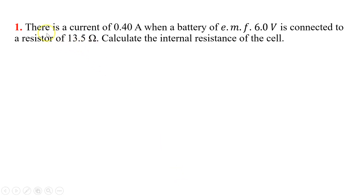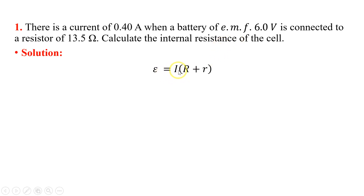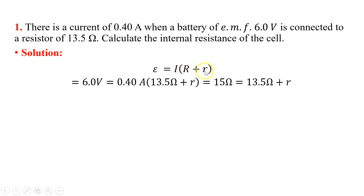Question 1: There is a current of 0.4 ampere when a battery of EMF 6.0 volt is connected to a resistance of 13.5 ohm. Calculate the internal resistance of the cell. Using the equation EMF = I(R + r), substituting the values and solving, we find the internal resistance of the battery to be 1.5 ohm.